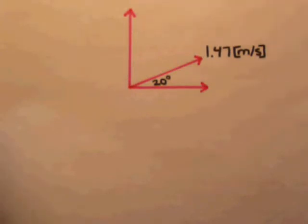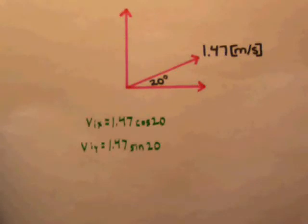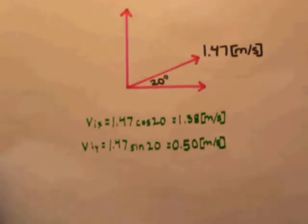Let's find the final velocity of the horse and its angle above the horizontal. First, we need to find the horizontal and vertical velocities using trig. The initial velocity in the x direction is 1.38 meters per second and the initial velocity in the y direction is 0.5 meters per second.